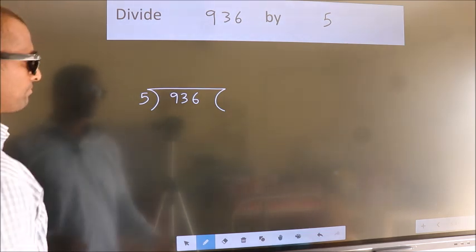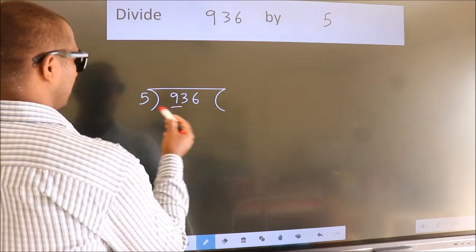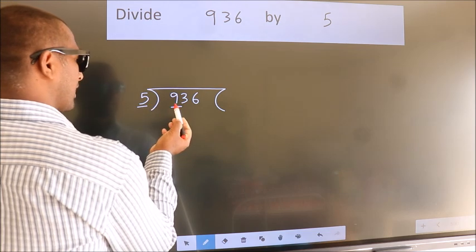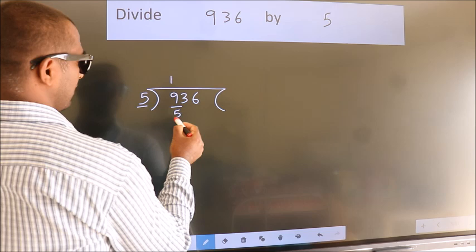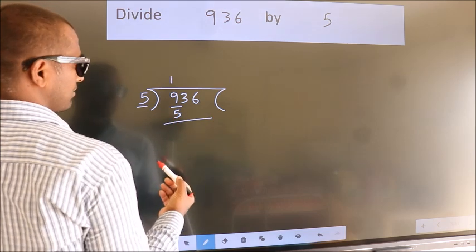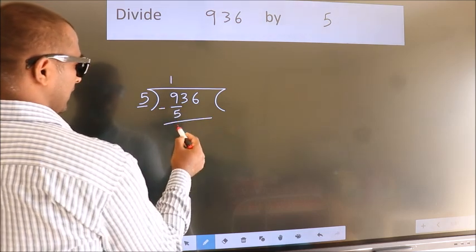Next. Here we have 9, here 5. A number close to 9 in 5 table is 5 once 5. Now we should subtract. We get 4.